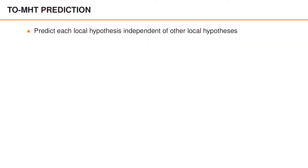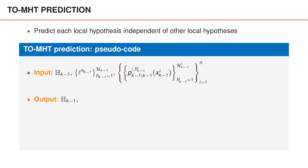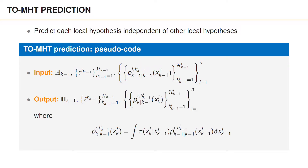As we've seen before, each local hypothesis can be predicted independent of the other local hypotheses. In the track-oriented MHT prediction, we have at the previous time the lookup table, the log weights, and the densities for the local hypotheses. In the predicted density, the global lookup table is the same — it's not affected by the prediction. Neither are the log weights. However, for each local hypothesis, we use the Chapman-Kolmogorov prediction to compute the predicted density. So if the densities are Gaussian and the motion model is linear, this is the Kalman prediction.